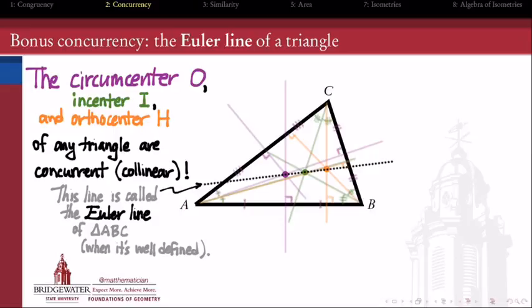Now it's called the Euler line when it's actually well-defined, and it's worth thinking about is there a circumstance under which a triangle does not have a well-defined Euler line?